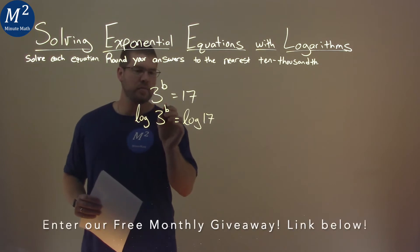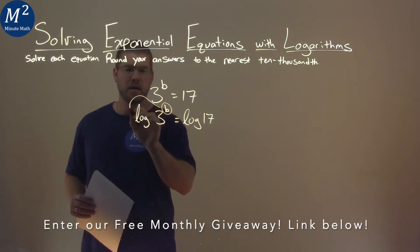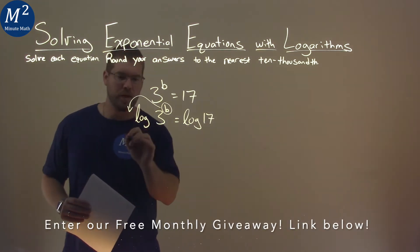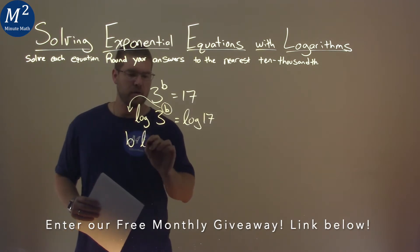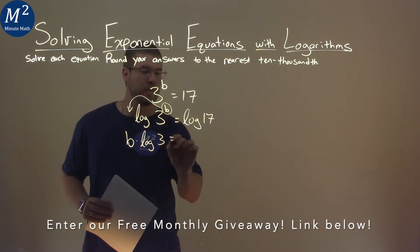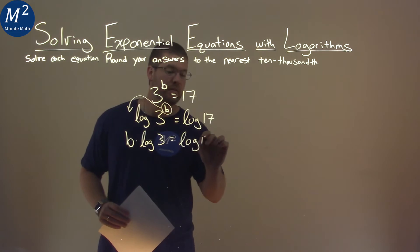When we do that, this exponent right here, that b, can come out front. So we're left with b times the log of 3 is equal to the log of 17.